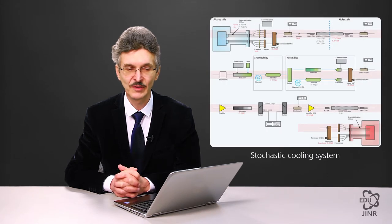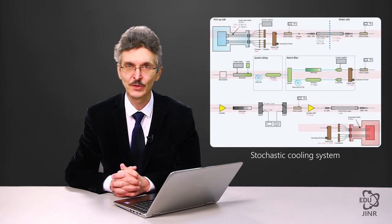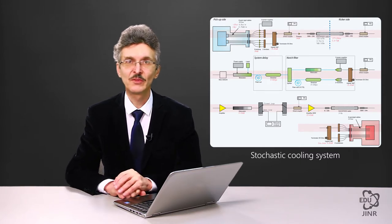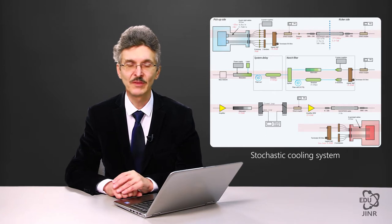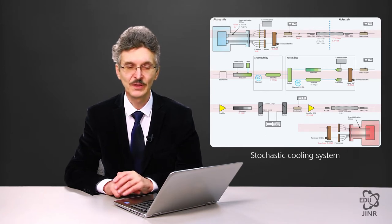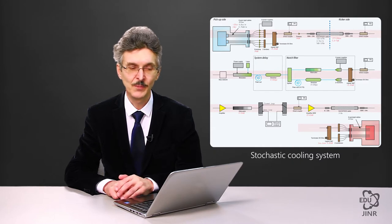At one point of the ring there is a pickup electrode which measures beam parameters. Next, the signal from this pickup electrode is summarized, calculated and processed by certain electronics and is applied to another electrode, which in turn impulsively acts upon the beam. This is referred to as the kicker.